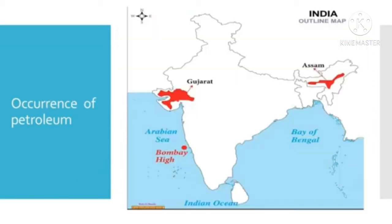The chief petroleum producing countries are United States of America, Kuwait, Iraq, Iran, Russia and Mexico. In India, petroleum is found in Assam, Gujarat, Maharashtra, Andhra Pradesh and Tamil Nadu. By drilling through the earth, the crude oil is pumped out from the well as a black liquid. The first oil well in the world was drilled in Pennsylvania, United States of America in 1859. The second oil well was drilled in Makkum, Assam, India in 1867.